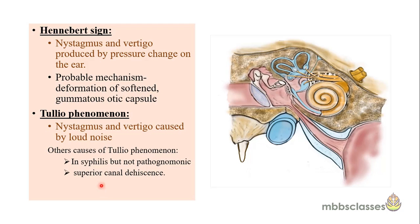Because of these fibrous adhesions, they could be the cause of Hennebert's sign and Tullius phenomena seen in this disease. Hennebert's sign is the nystagmus and vertigo produced by pressure changes on the ear, occurring due to deformation of the softened otic capsule. Tullius phenomena is nystagmus and vertigo caused by loud noise. Since the saccule, when it bulges, lies against the stapes footplate, any pressure change in the external auditory canal is transmitted through the stapes footplate into the saccule, causing vertigo. The Tullius phenomena is also seen in syphilis and sometimes in superior canal dehiscence.